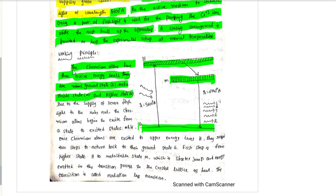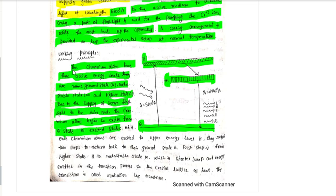The three energy levels are: ground state Z, metastable state M, and higher energy state H. Due to the supply of xenon flash tube light to the ruby rod, the chromium atoms begin to get excited from ground state Z to higher energy state H. Once chromium atoms are excited to the upper energy level H, they require two steps to return back to their ground state.